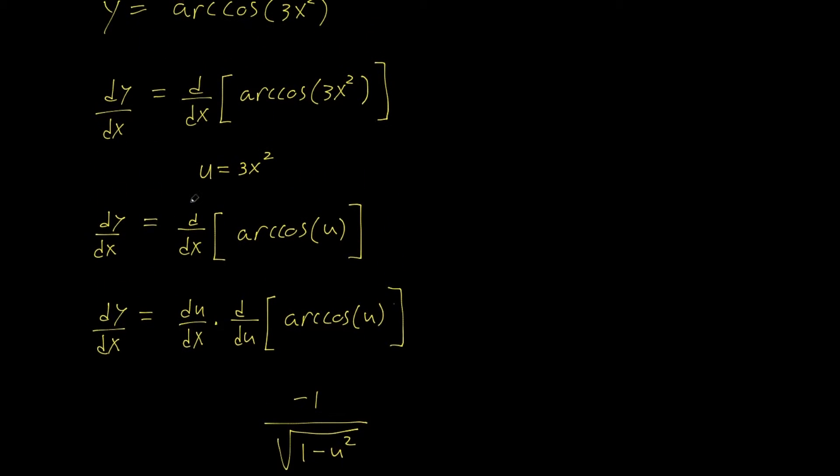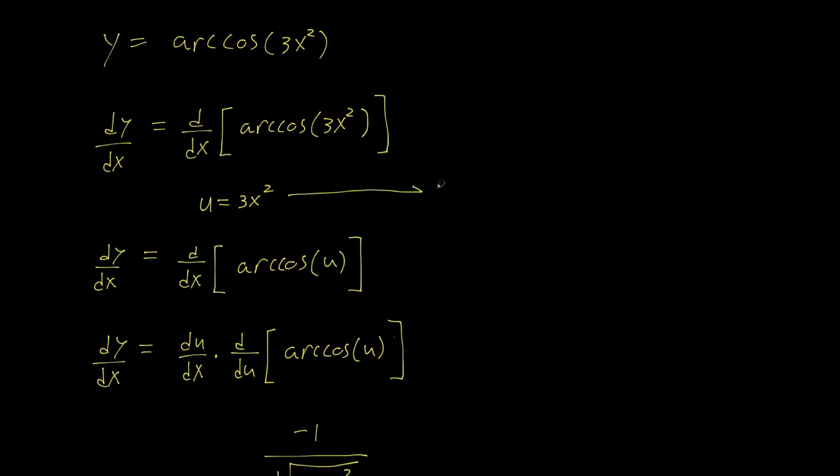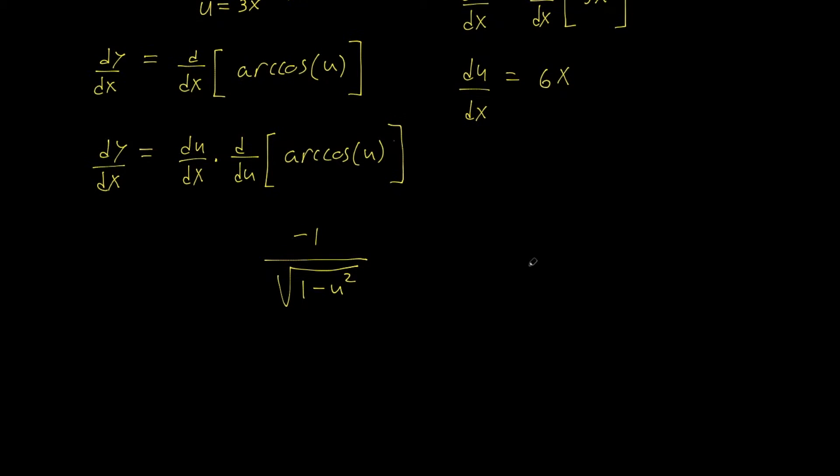Derivative of u with respect to x, well let's solve that. So du/dx is going to equal d/dx of 3x squared. This is going to be a case of power rule. So we have du/dx equals, this 2 is going to come down and multiply with the 3, so we get 6. 2 minus 1 is equal to 1, so we get 6x. du/dx equals 6x.